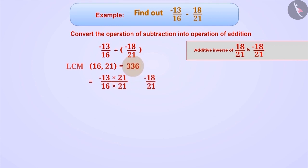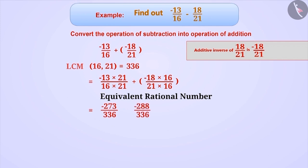And to make the denominator of minus 18/21 equal to 336, we multiply both its numerator and denominator by 16. This will give us the equivalent rational number of minus 13/16 as minus 273/336, and the equivalent rational number of minus 18/21 as minus 288/336.